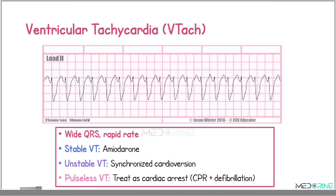Then we have ventricular tachycardia, which is characterized by wide QRS complexes and a rapid rate. Stable ventricular tachycardia may be treated with antiarrhythmic medications, for example amiodarone. Unstable ventricular tachycardia is treated with immediate cardioversion. In the case of pulseless ventricular tachycardia, we treat it as a cardiac arrest with CPR and defibrillation.